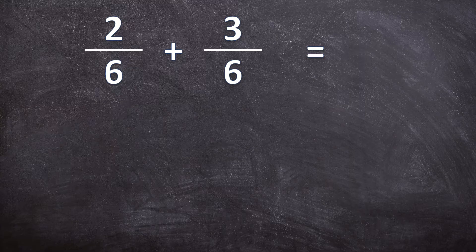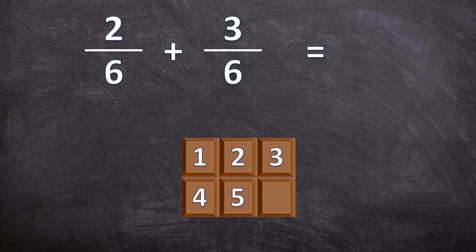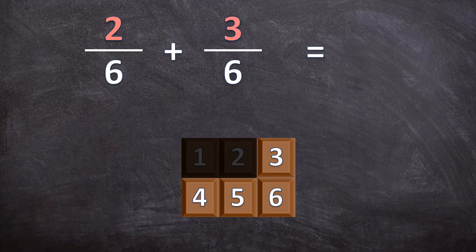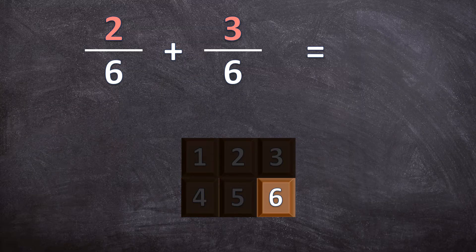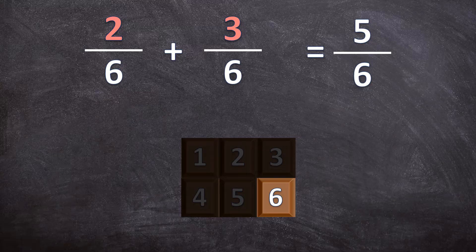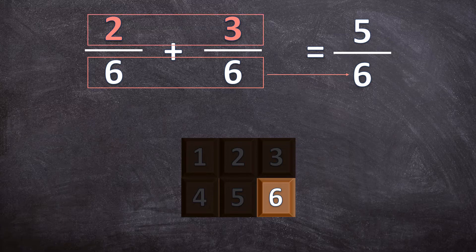Here we have 2 over 6 plus 3 over 6, and you can see that their denominators are the same — they are both 6. I'm going to use a picture to start with. Let's say I have a chocolate with 6 equal pieces, and I eat 2 of those pieces, but then a little bit later I eat 3 more pieces. When you add fractions with the same denominator, your denominator in the answer is also going to be the same, but you add the numerator values together. So 2 over 6 plus 3 over 6 is 5 over 6.